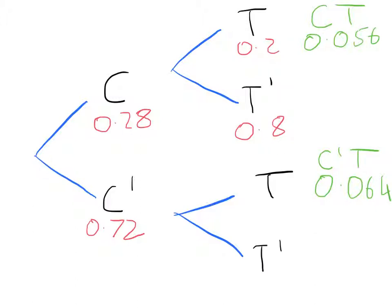So to figure out what the probability is here for this one, the conditional probability, what we have to do is we've got to work backwards. We know that the total equals 0.064.